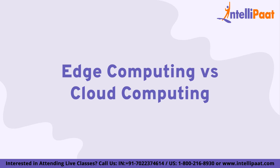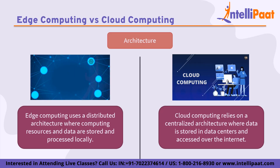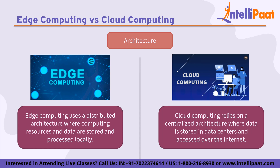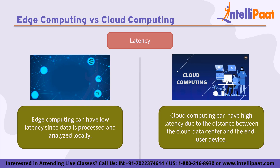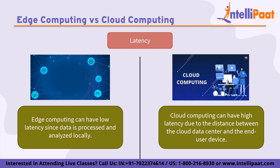Now we'll look at edge computing versus cloud computing. Edge computing and cloud computing are two distinct computing paradigms that have different architectures, capabilities, and use cases. Starting with architecture — edge computing uses a distributed architecture where computing resources and data are stored and pre-processed locally on edge devices or servers. Cloud computing, on the other hand, relies on a centralized architecture where computing resources and data are stored in data centers and accessed over the internet. In terms of latency, edge computing can have low latency since data is processed and analyzed locally, reducing the need for data to travel back and forth over the network. Cloud computing can have high latency due to the distance between the cloud data center and the end user device.